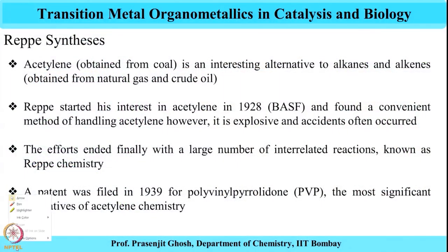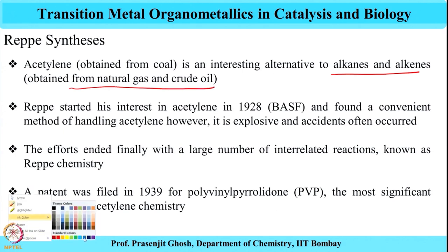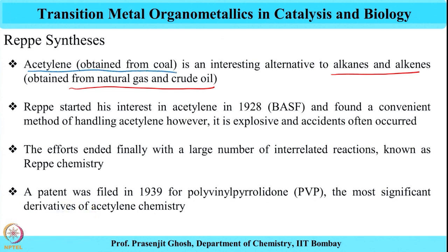Acetylene's primary source is from coal, unlike other alkanes or alkynes which come from natural gas and crude oil. Acetylene is exclusively obtained from coal. However, like alkanes and alkynes, acetylene can be used as fuel and also, because of its unsaturation, can be converted to other chemicals.